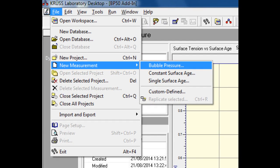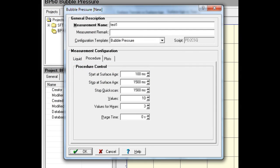We select a new bubble pressure measurement and can then set the range of the experiment in terms of the surface age of the bubbles.